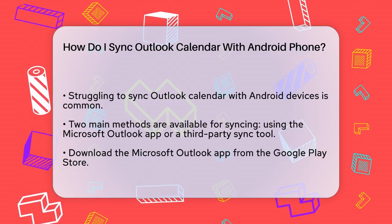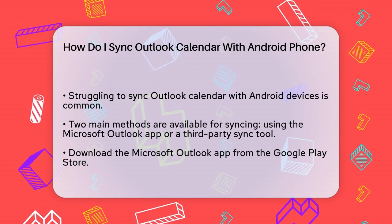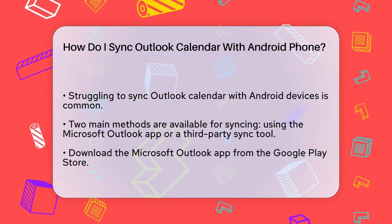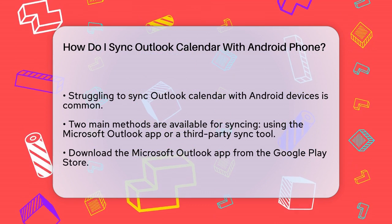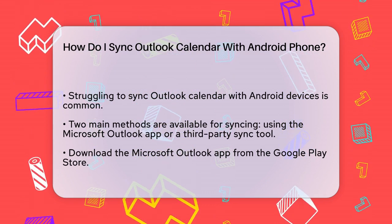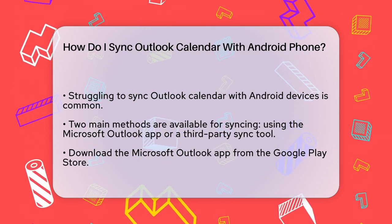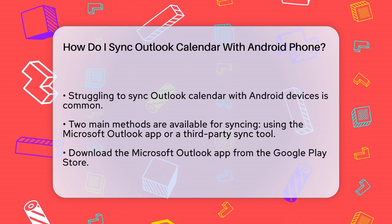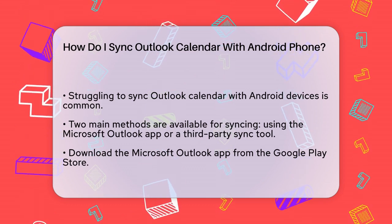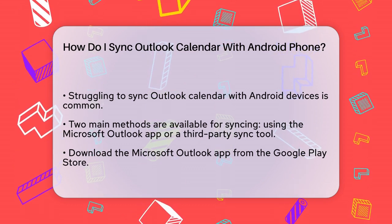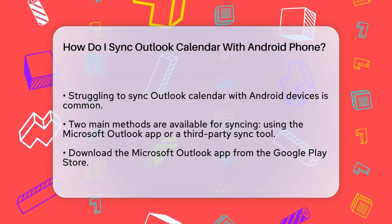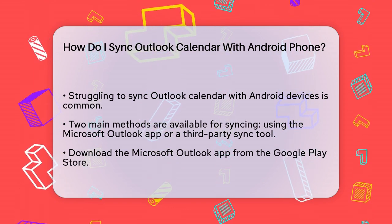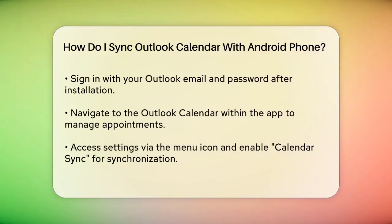First, you have a couple of methods to choose from, each with its own advantages. One of the most straightforward ways is to use the Microsoft Outlook app on your Android device. To start, open the Google Play Store on your Android phone, search for Microsoft Outlook, and download the app. Once installed, open the app and sign in with your Outlook email and password. If you don't have an Outlook account, you can create one right there.